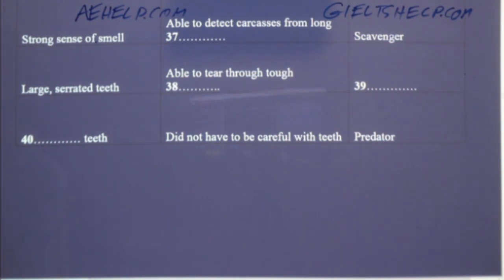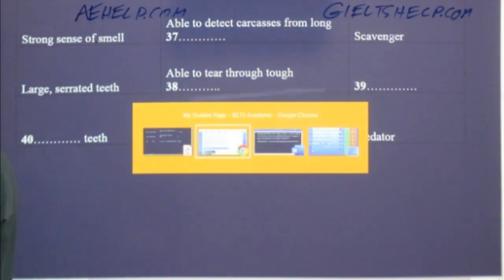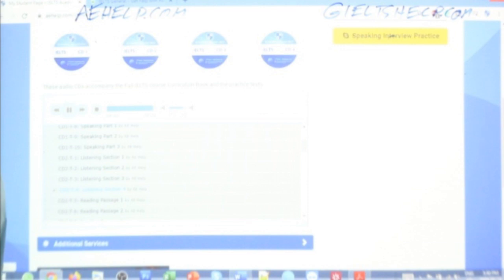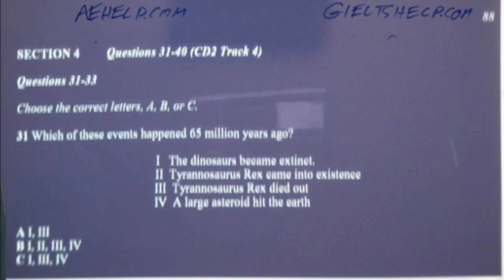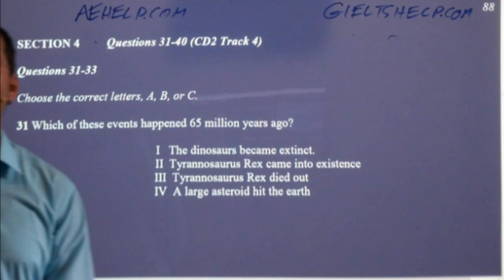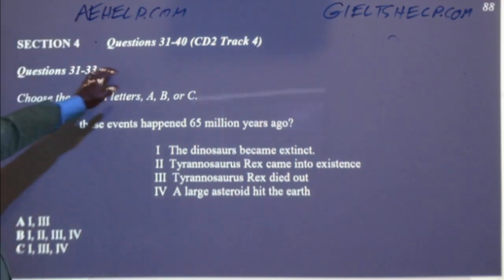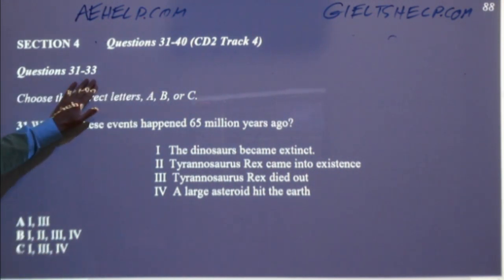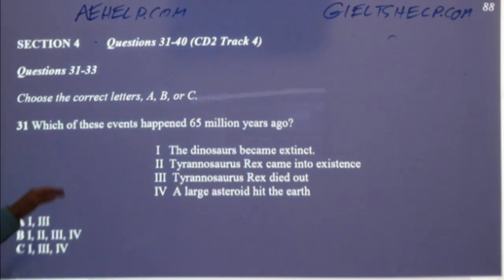You will now have half a minute to check your answers. Students, check your answers, pay attention to instructions, typos, and spelling mistakes. Let's do this together, one question at a time. Section four, questions 31 to 40. Questions 31 to 33: choose the correct letters A, B, or C. This is multiple choice for 31 — which of these events happened 65 million years ago? Logic will help you here. The professor is very clear on her answer.